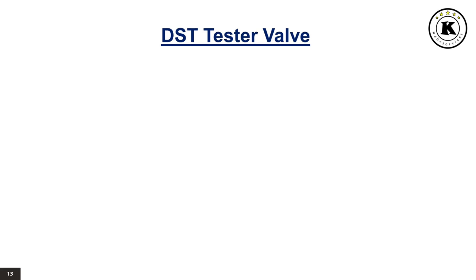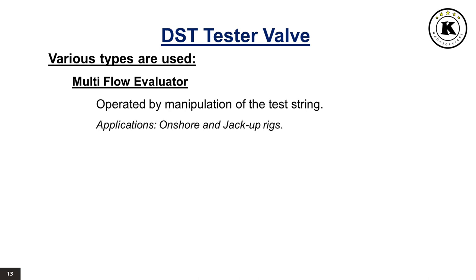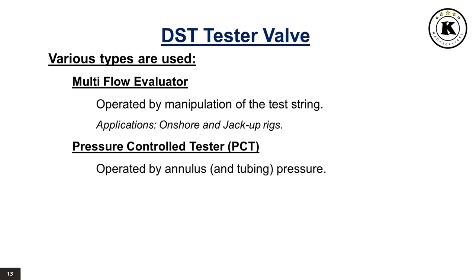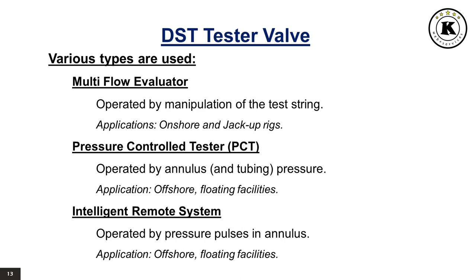DST Tester Valve. Various types of tester valves are used. Multi-flow Evaluator: operated by manipulation of the test string, generally used onshore and on jackup rigs. Pressure Controlled Tester: operated by annulus and tubing pressure, generally used offshore and on floating facilities. Intelligent Remote System: operated by pressure pulses and annulus, generally used offshore and on floating facilities.